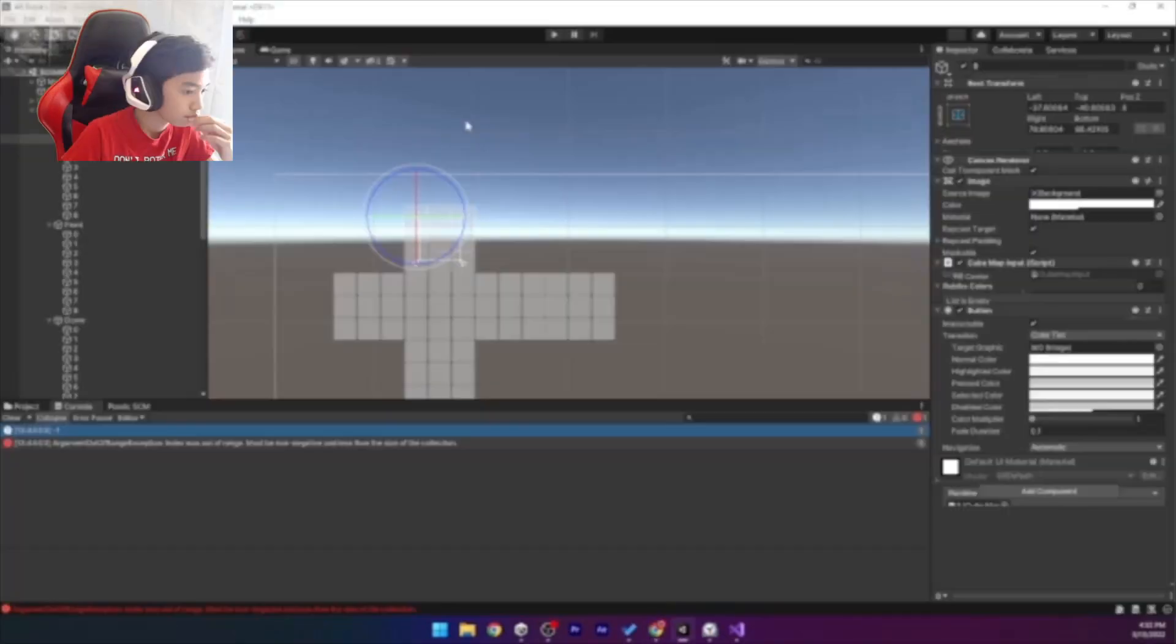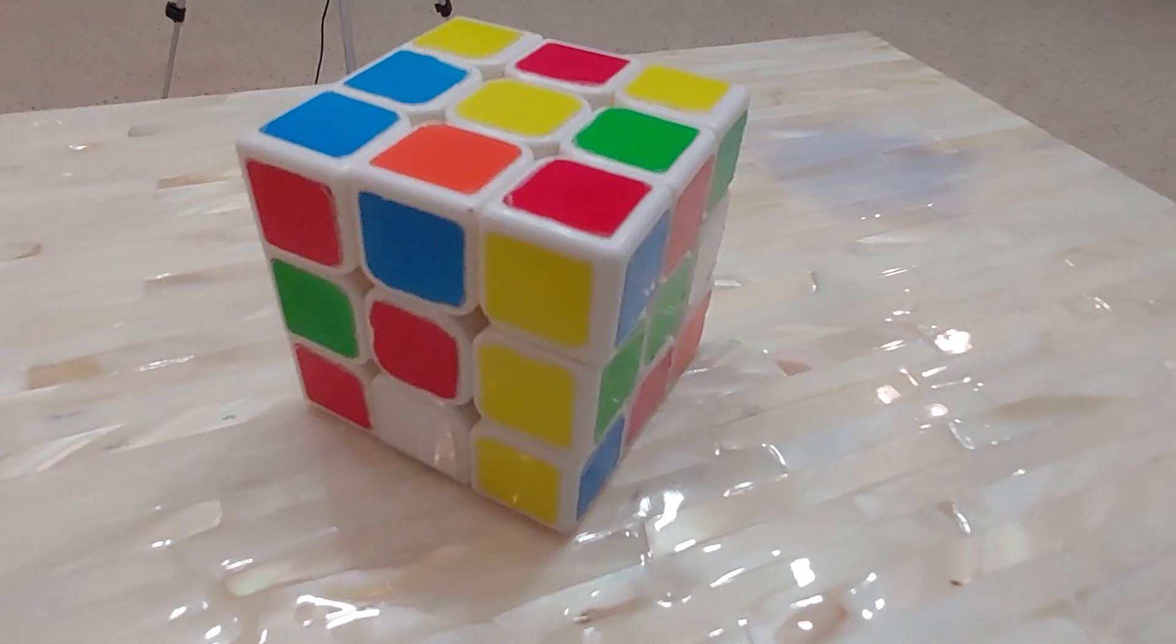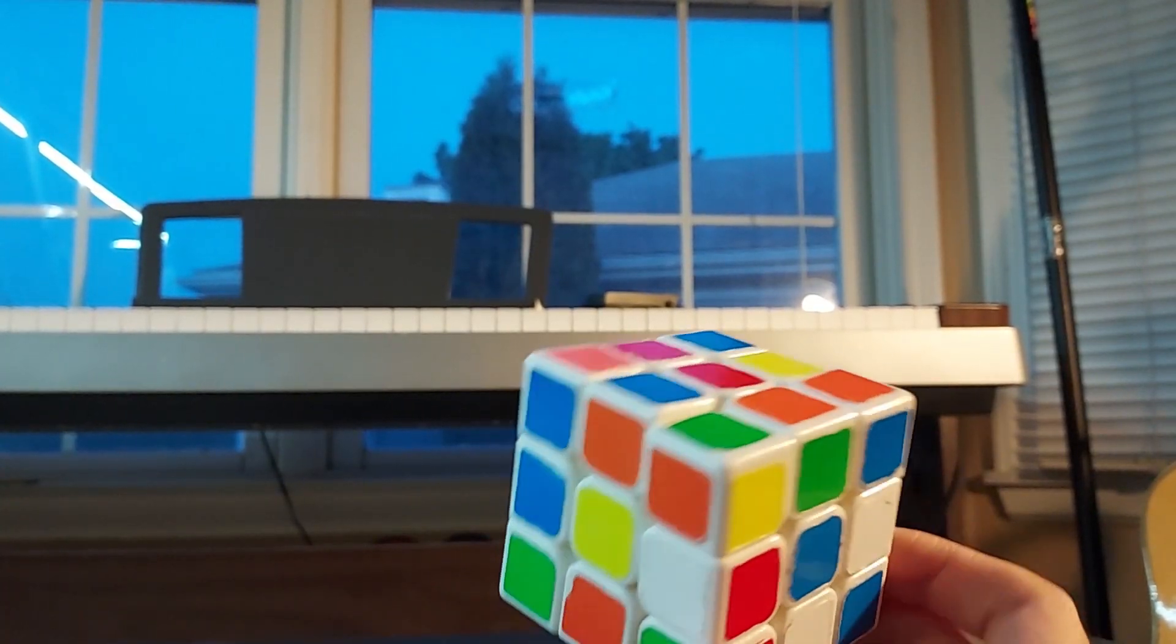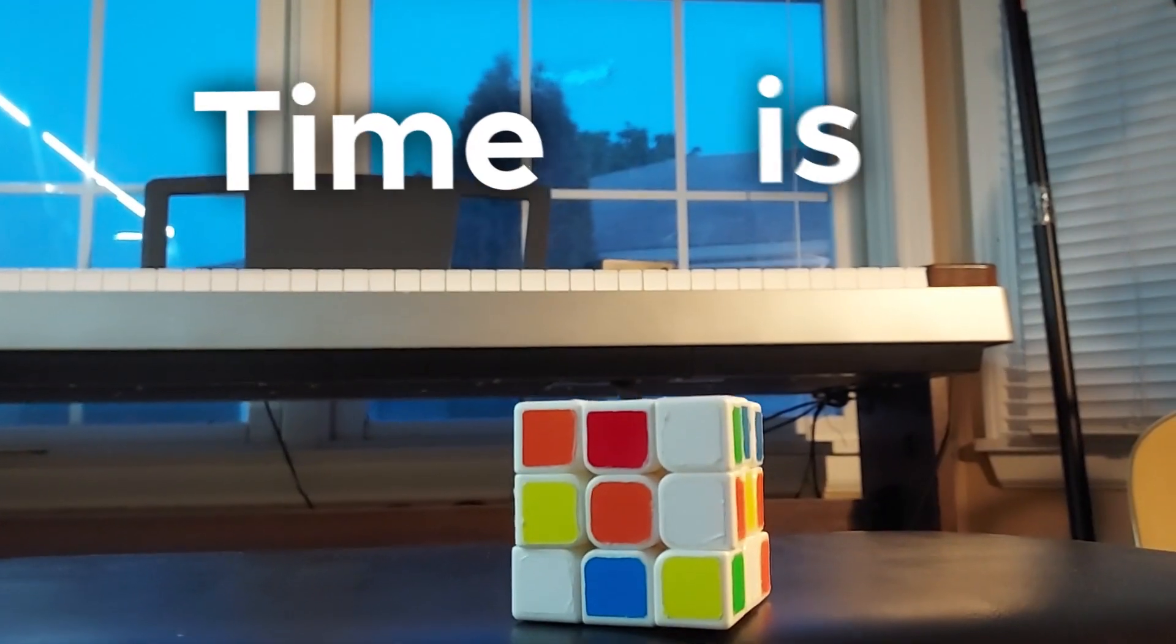With five hours left, the final step to complete this project is getting the scramble from the real Rubik's Cube. Originally, I wanted to use some fancy image recognition software, but then it dawned on me. I have no idea how to get the scramble, and time is running out.